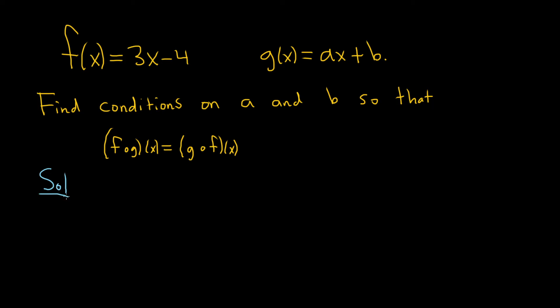So solution. I'm thinking the way to do this is we just compute each composition and then set them equal. So let's work on the left hand side first. So f of g of x. So this is equal to f of g of x. That's just the definition of f of g.